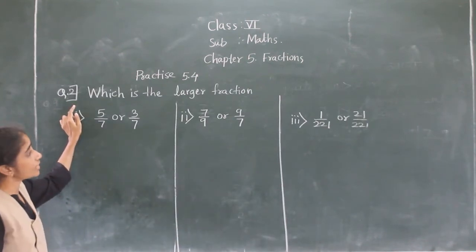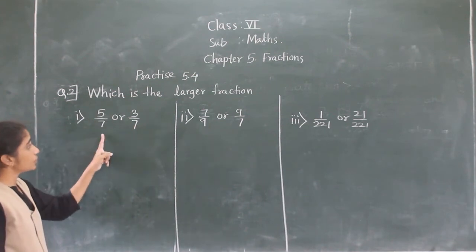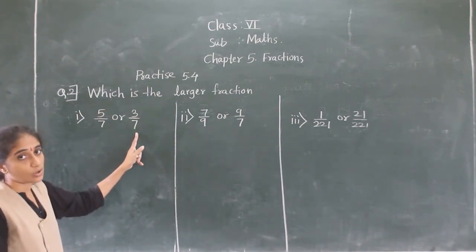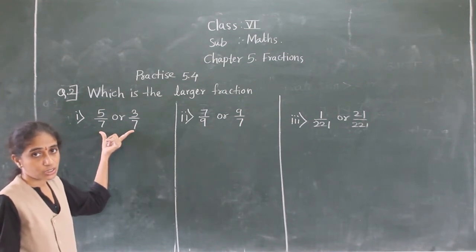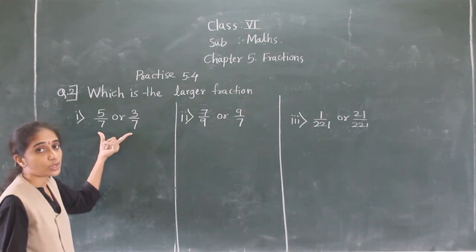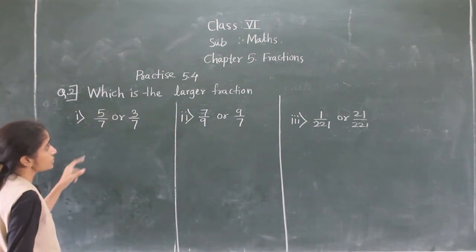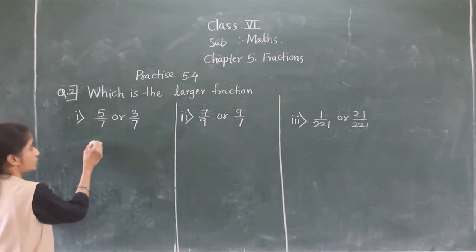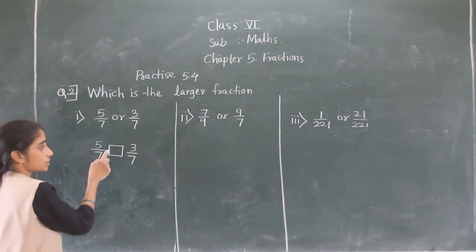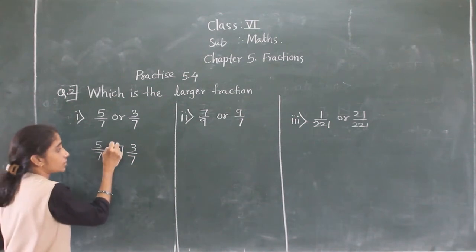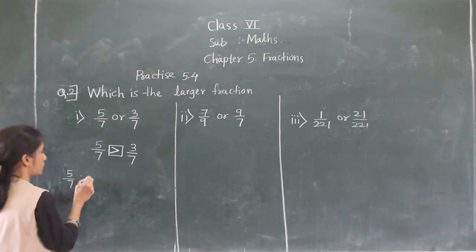Let's solve Question 2: which is the larger fraction? First example: 5 upon 7 or 3 upon 7. Check denominators — they are the same. This is a like fraction, so we compare numerators. 5 is greater than 3, so 5 upon 7 is the larger fraction.